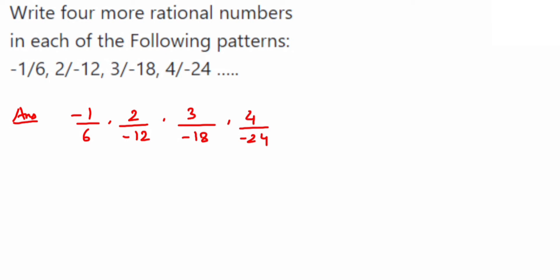Same in denominator also, like 6 multiplied by minus 2 is minus 12, 6 multiplied by minus 3 is minus 18, in that way. So we are going to find out the next four rational numbers.